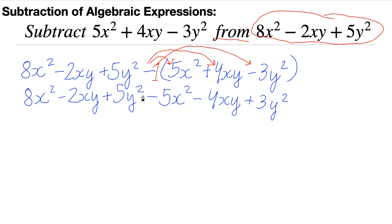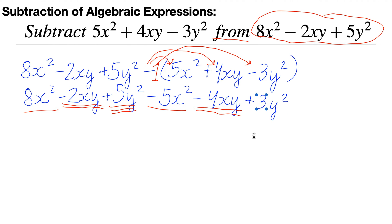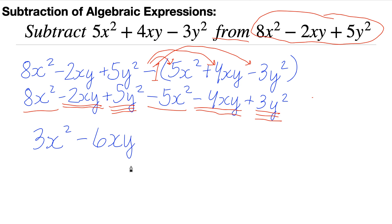Then we can combine terms the way we used to. Let's use tick marks: 8x squared and minus 5x squared are x squared terms; minus 2xy and minus 4xy are xy terms; and 5y squared and plus 3y squared are y squared terms. So 8x squared minus 5x squared: 8 minus 5 gives us 3x squared. Minus 2 minus 4: they have the same sign, so we add them and copy the sign, giving minus 6xy. And 5 plus 3 gives us 8y squared. That is our answer for the subtraction of algebraic expressions.